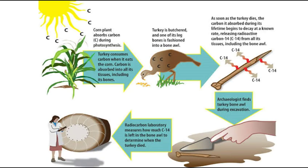For example, a corn plant absorbs carbon during photosynthesis, and a turkey absorbs carbon when it eats the corn. Carbon is absorbed into all its tissues, including its bones. The turkey is butchered and one of its leg bones is fashioned into a bone awl. As soon as the turkey dies, the carbon it absorbed during its lifetime begins to decay at a known rate, releasing C14 from all its tissues including the bone. Archaeologists find the turkey bone awl during excavation, and a radiocarbon laboratory measures how much C14 is left in the bone awl to determine when the turkey died.